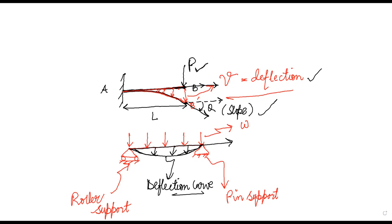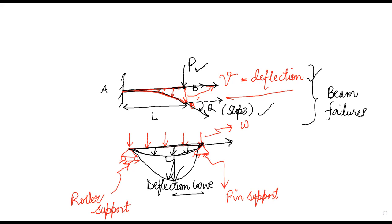Before calculating slope and deflection, we need to understand why we are interested in them. The reason is that too much deflection or too large a slope value can cause beam failures. If the deflection of the beam is very large, it is equivalent to beam failure. So we want slope and deflection to be under control. That is why calculating slope and deflection in the beam is the topic we have to take on.